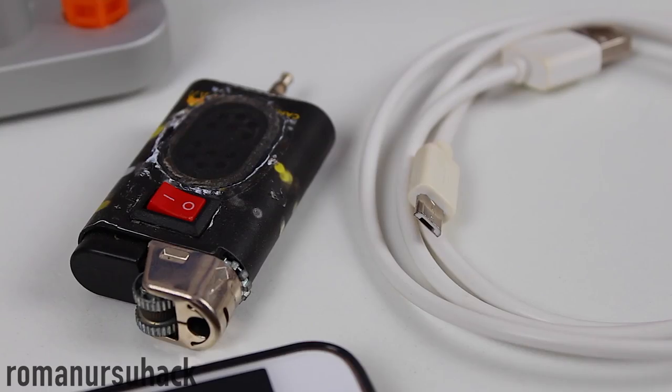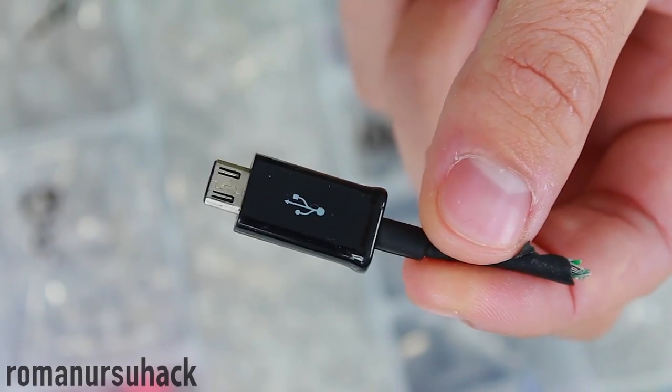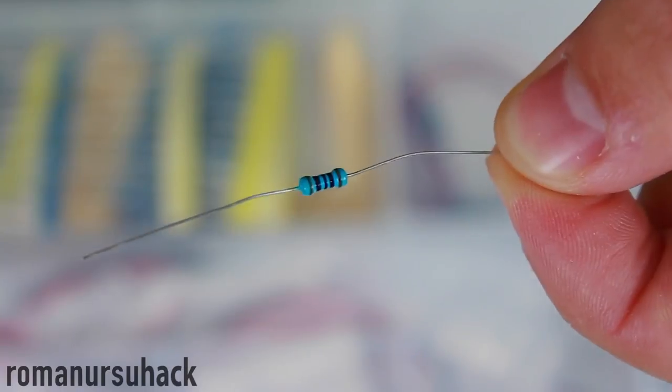Hi there! Today I want to show you 3 ideas about making DIY smartphone gadgets. Let's get started, and for the first project we'll need a micro-USB plug, one white diode and a 100 ohms resistor.